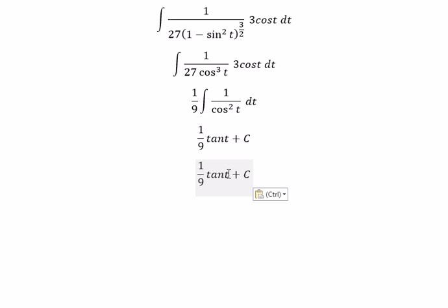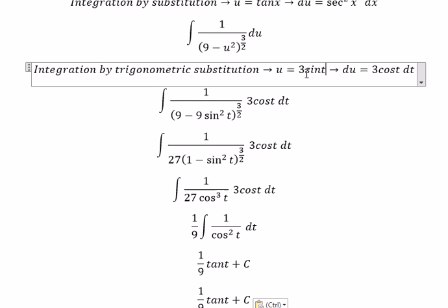For t, we need to change back to u, so we divide both sides by 3.